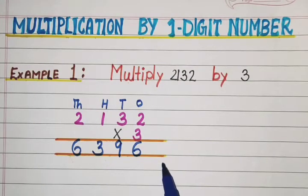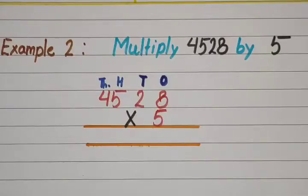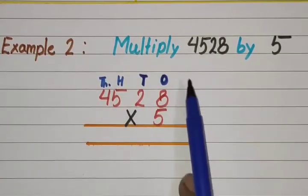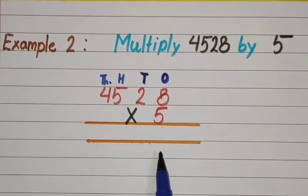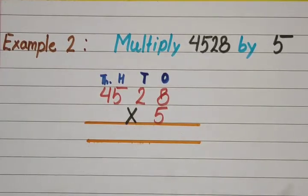I hope that is clear to you. Now, this is example number 2: multiply 4528 by 5. You have to write it like this. The first question was without carry, and this one is with carry.